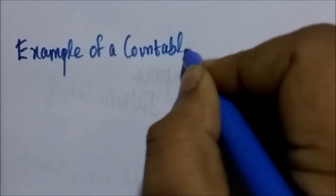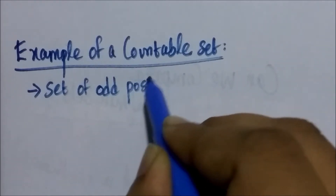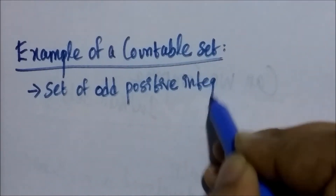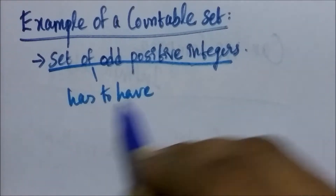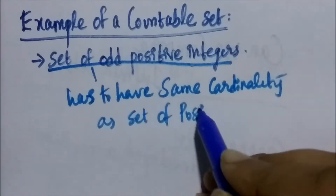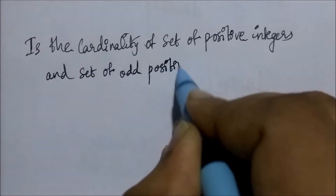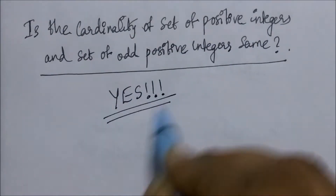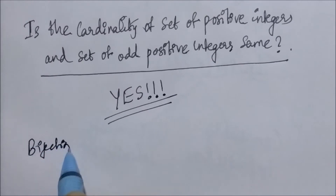Let's see an example of a countable set which is also infinite. As an example of a countable set, we take the set of odd positive integers. For the set of odd positive integers to be a countable set, it has to have the same cardinality as the set of positive integers. It turns out that yes, they have the same cardinality. Now how do we prove it?